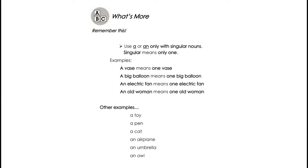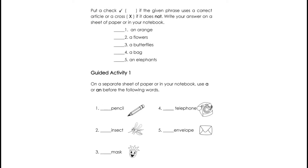Put a check if the given phrase uses a correct article or a cross or X if it does not. Write your answer in the blank before each number. Number 1: An orange — is it correct? Number 2: A flowers. Number 3: A butterflies. Number 4: A bag. And Number 5: An elephant.